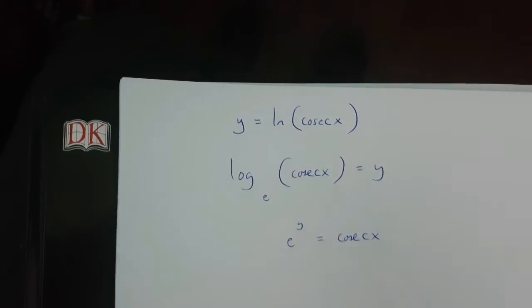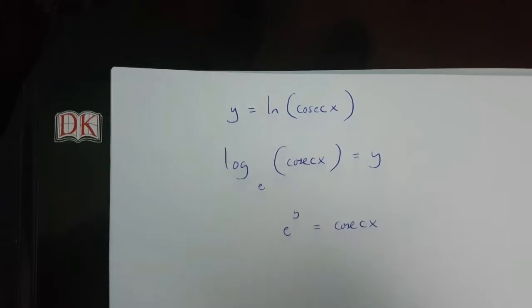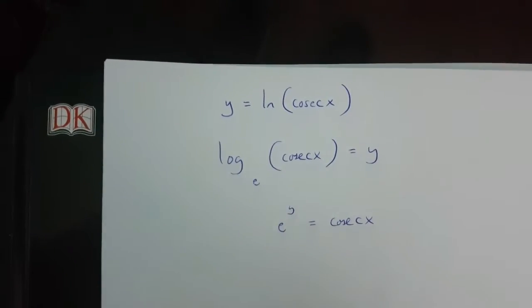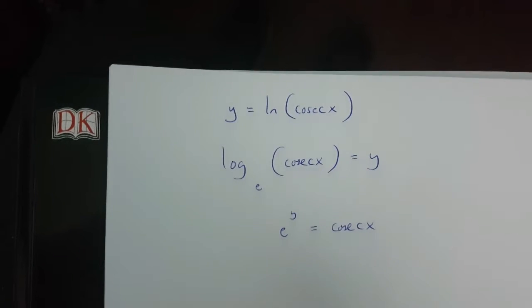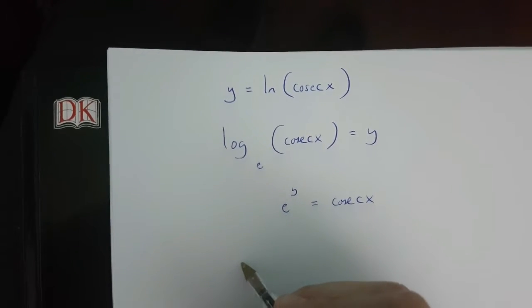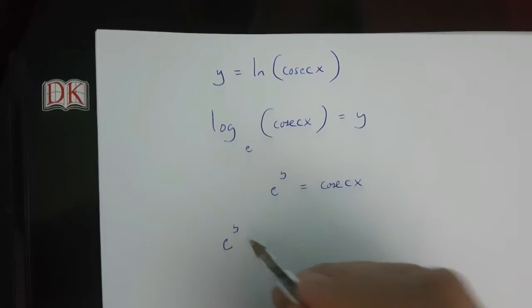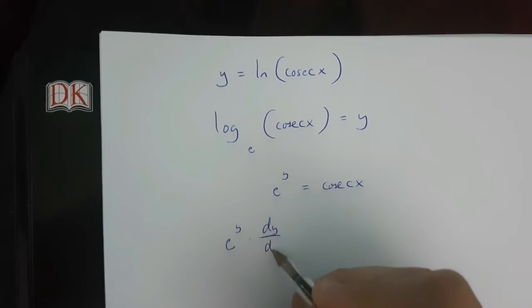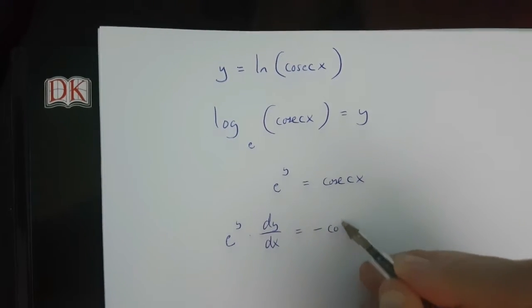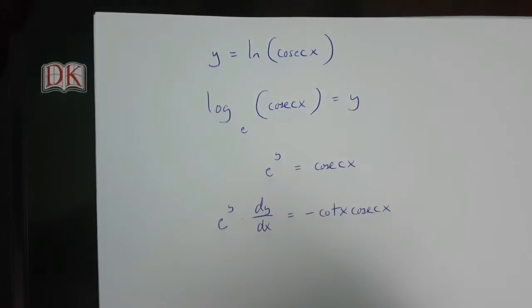To get dy over dx, I need to use implicit differentiation. If I use implicit differentiation on this equation, what I'll then get is e to the power of y times dy over dx equals minus cot x times cosec x.